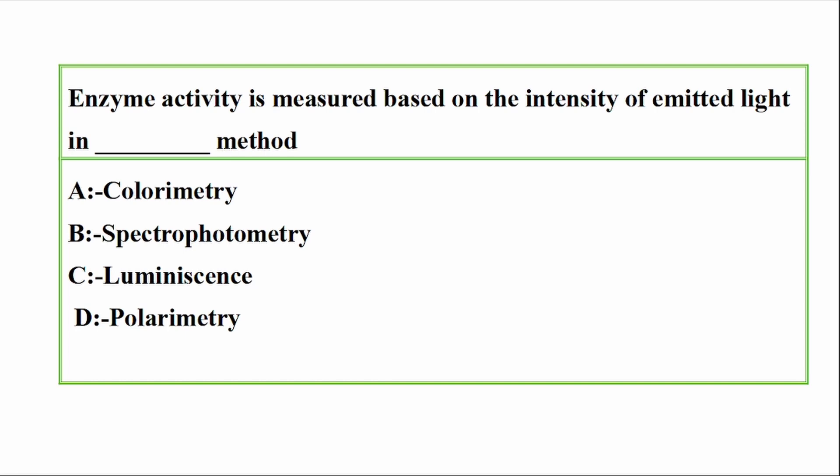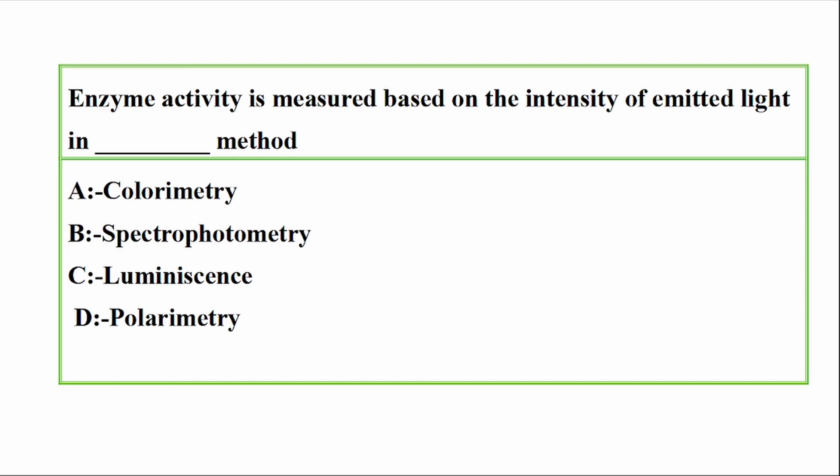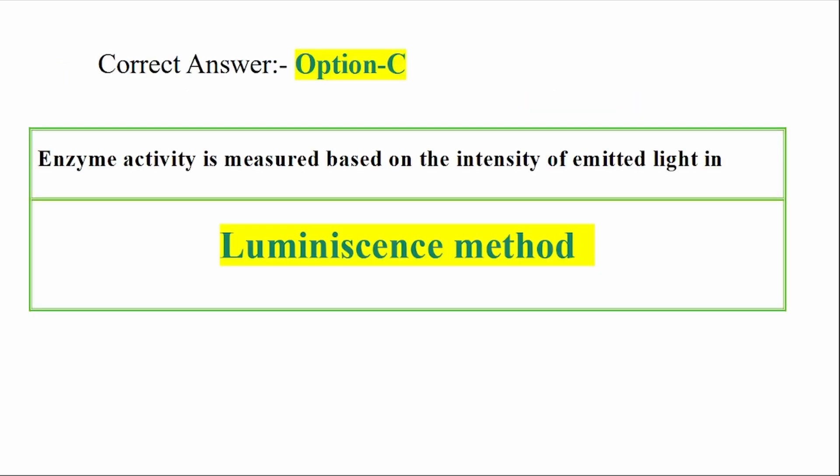NCM activity is measured based on the intensity of emitted light. Options: A — Colorimetry, B — Spectrophotometry, C — Luminescence, D — Polarimetry. Correct answer: Option C — Luminescence. NCM activity is measured based on the intensity of emitted light in the luminescence method.